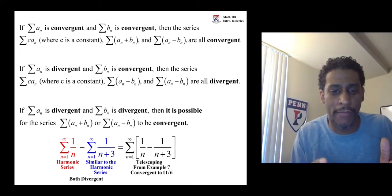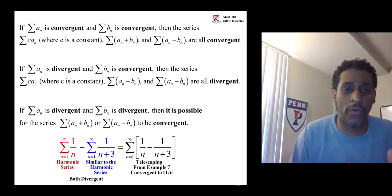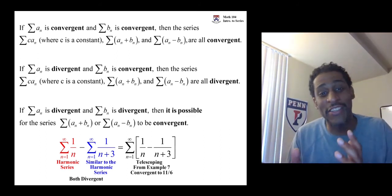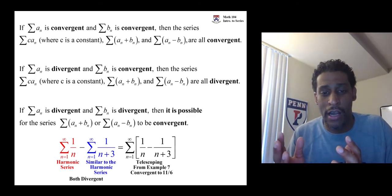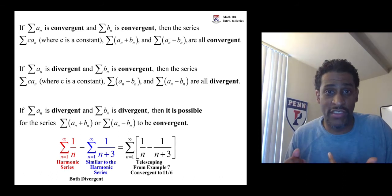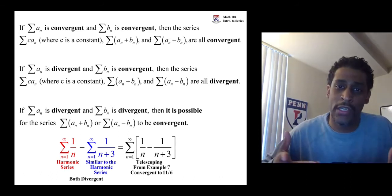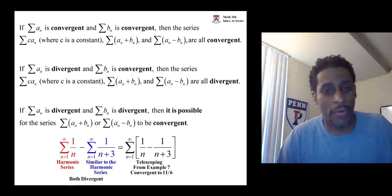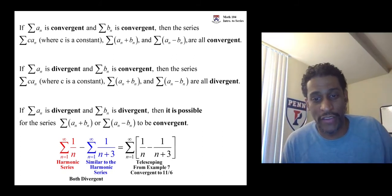the one over N plus three subtracted from the one over N, you actually end yourself in the place of being with the telescoping series that we have from before, which we knew converged to 11 over 6.